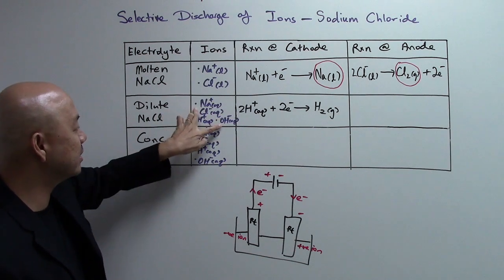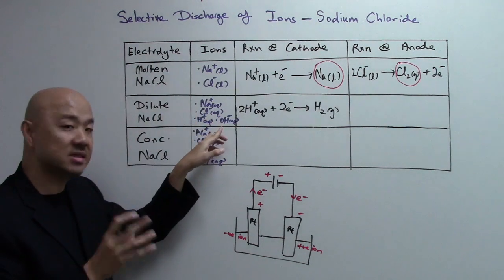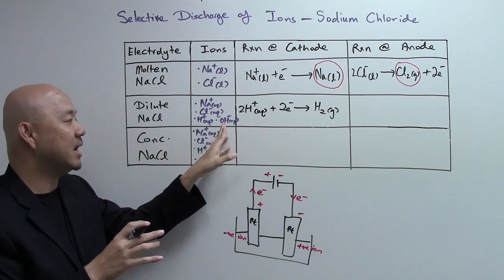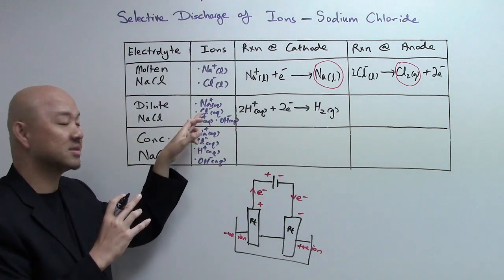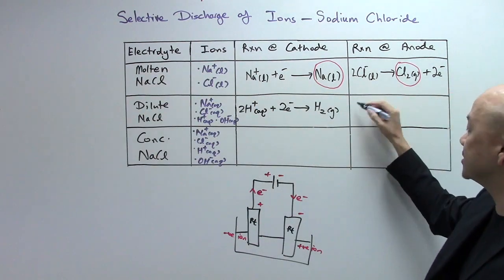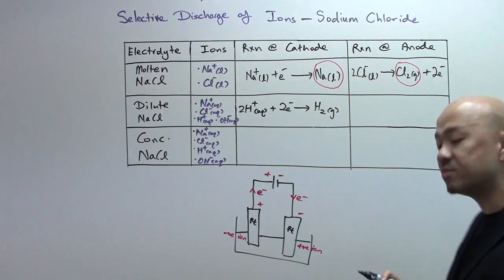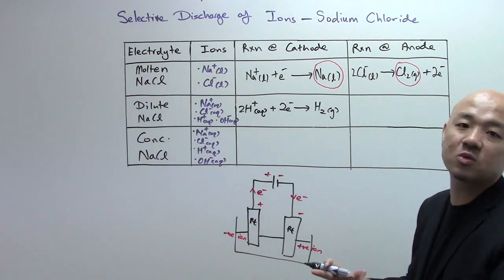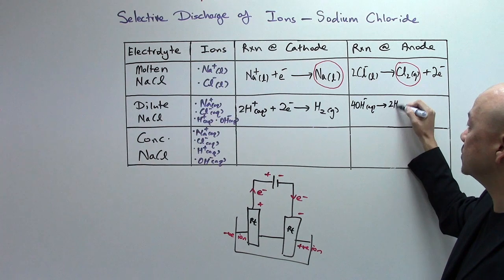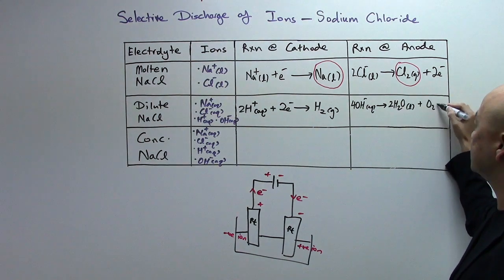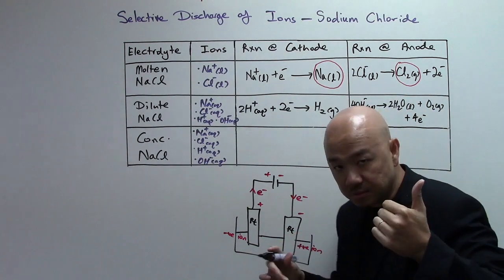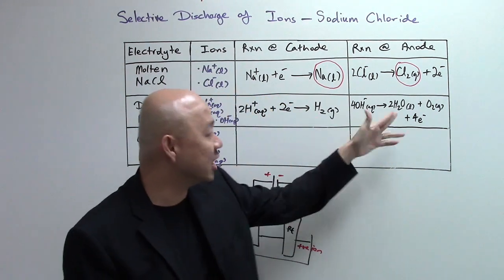And then for the anode, the anions, you have chloride and the hydroxide. Based on ease of discharge series once again, hydroxide ions have a higher ease of discharge than the chloride ions. So it will be your hydroxide ions that is being discharged. So this one, I kind of told my student to memorize it, so that you can go very fast. It's 4, 2, 1, 4. So it's 4 hydroxide ions, becomes 2 water and then oxygen gas, not enough space, so I'm going to bring it down, 4, 2, 1, 4. If you check in terms of atoms of each element as well as its charges, they will all be balanced.